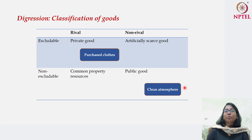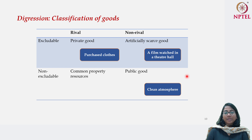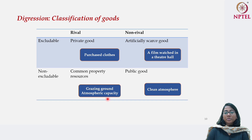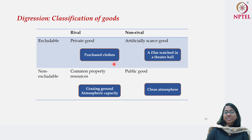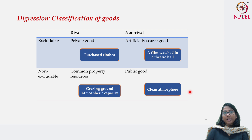Artificially scarce goods are non-rival but excludable — a film watched in a theatre hall can be an example. Common property resources like a grazing ground or the atmospheric capacity are rival but non-excludable: the capacity of the atmosphere to absorb CO2 is rival because as you keep adding more CO2 equivalent, that capacity gets reduced. We will come back to the concept of private good and public good as we go on, and we will see how renewable energy has the properties of public good — therefore, additional policy intervention is needed to promote renewable energy in the context of power generation or sustainable use of energy.